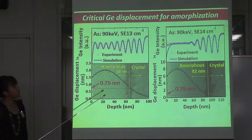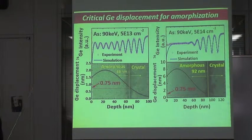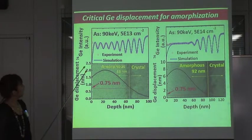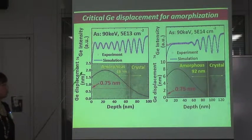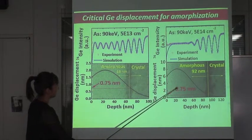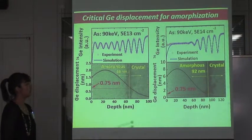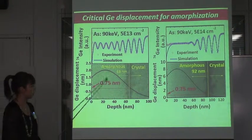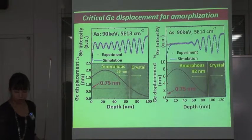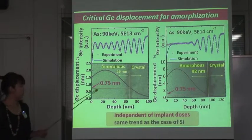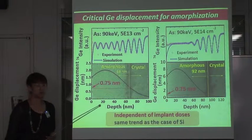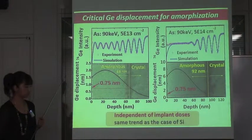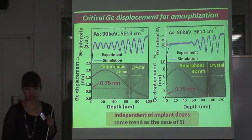The results from other dose samples: the left is 5×10^13 and the right is 5×10^14. We obtain the same critical displacement value of 0.75 nanometers, and we can confirm that this value is independent of implant doses. This is the same trend as observed in the case of silicon.